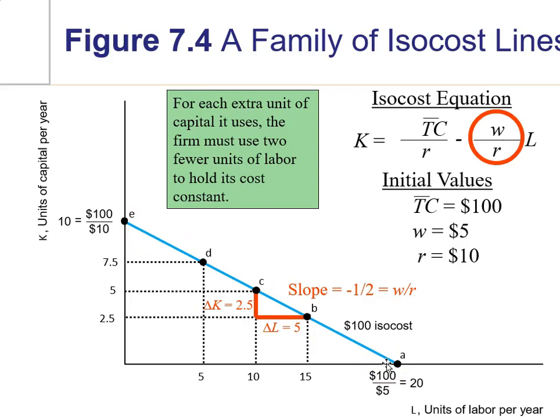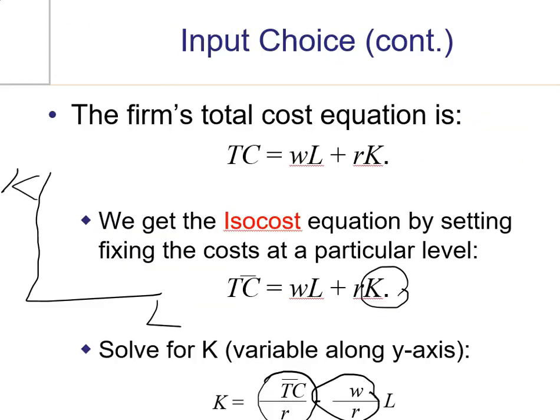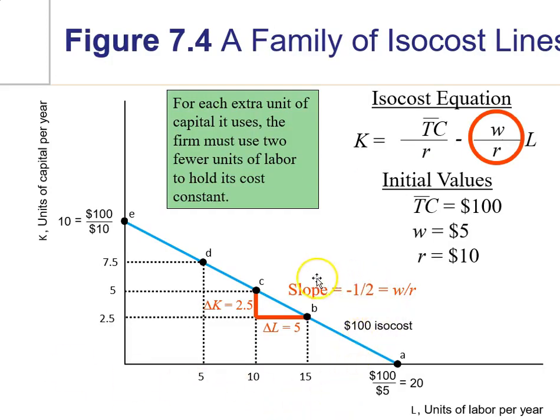A couple observations before we wrap up on isocost. First, the slope of the isocost. Recall from here, this was the mx, where L is the x and m is the slope, is w over r. The ratio of your input prices will determine this slope. So, in this example, we had wages costing you $5 and rental price of capital was $10. So, negative 5 over 10 is simply negative 1/2. So, that's the negative 1/2 here that we see the slope being negative 1/2. This w over r is the slope of the isocost.